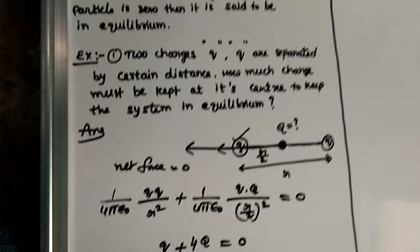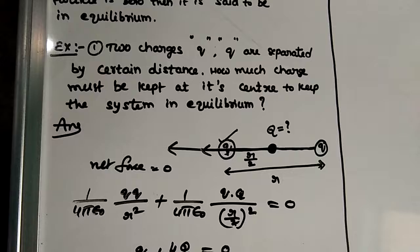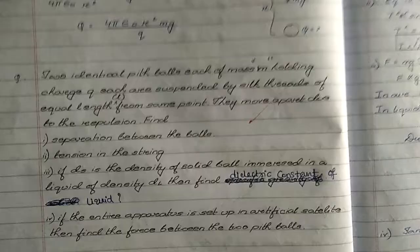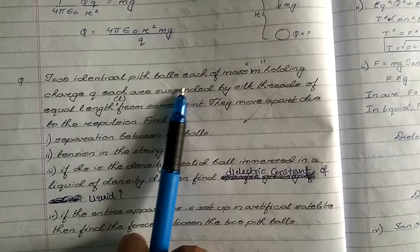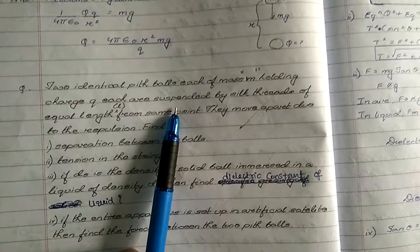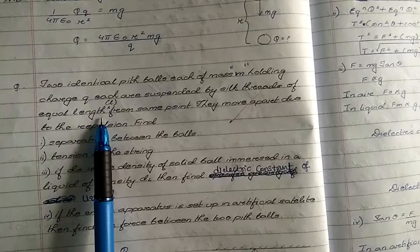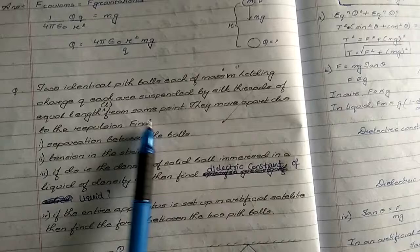So this type of applications, so many are there. I will show you one more question you can solve. Look at this question. Two identical pit balls, each of mass M, holding a charge Q each, are suspended by silk thread of equal length L from the same point. They move apart due to the repulsion force between them. The question is, what is the separation between the two balls, tension in the string?